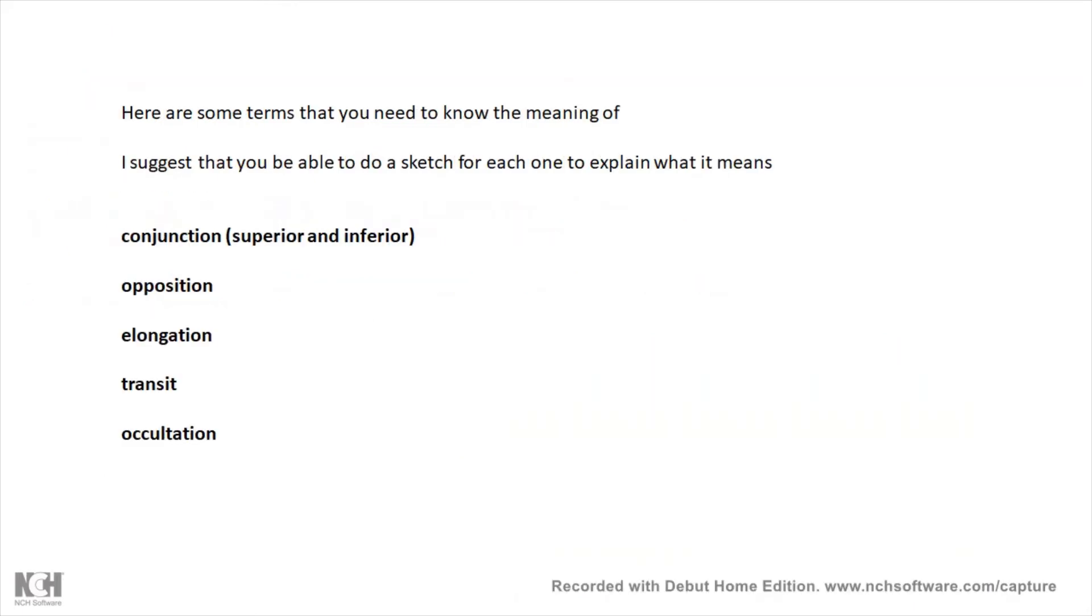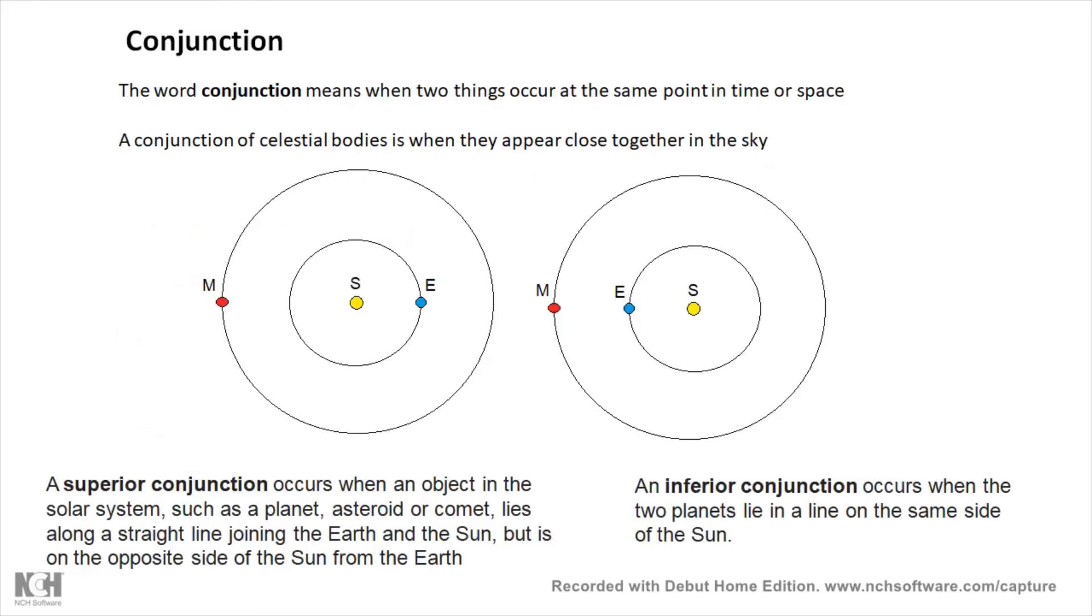There's a list of other terms that you need to know the meanings of, and I suggest you learn them and you be able to sketch them and be able to recognize them if you see them on a diagram: conjunction, opposition, elongation, transit, and occultation.